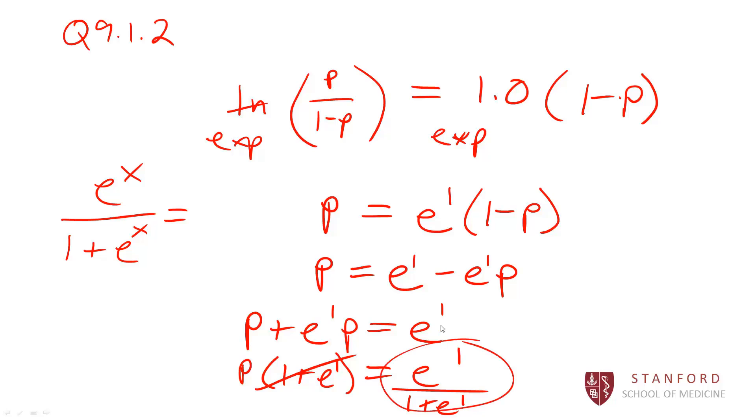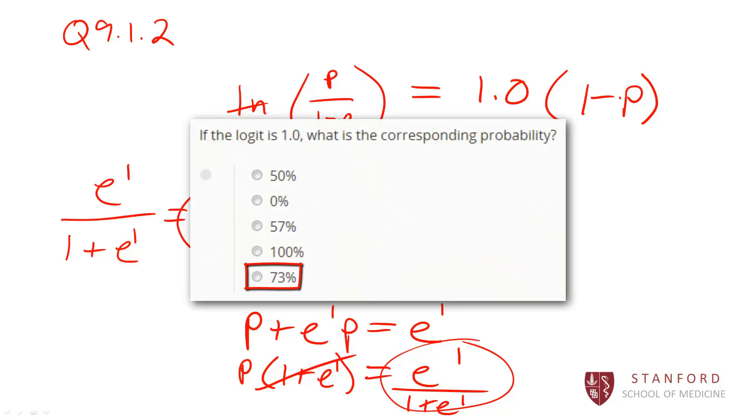We actually get that that is equal to a probability of 0.73. So the correct answer here is 73%, which is e.